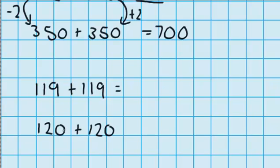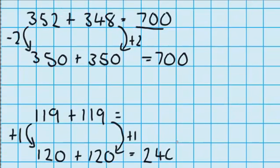So to change 119 to 120, I had to add one. And to change this 119 to 120, I also had to add one. Now 120 plus 120, that's easy for me to answer. It's 240, but that's not the answer to 119 plus 119.